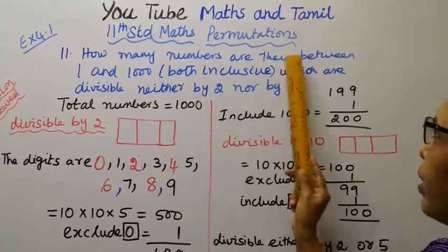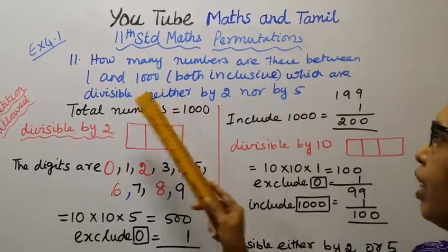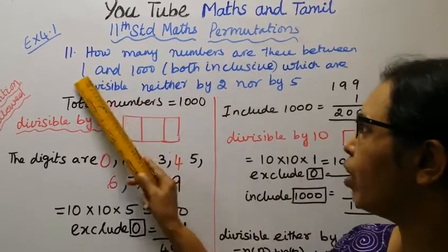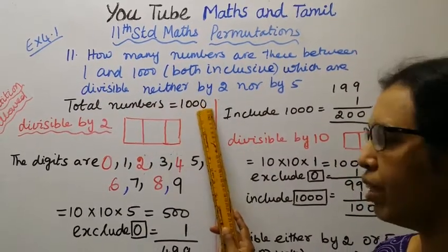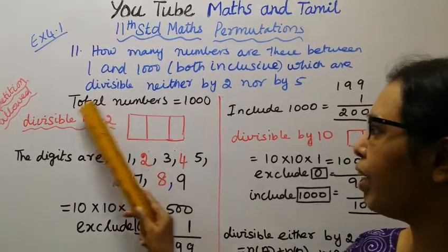How many numbers are there between 1 and 1000, both inclusive, which are divisible neither by 2 nor by 5? Both inclusive now, 1,000. After total numbers, 1,000. Total numbers, 1,000. The first number divisible by 2.